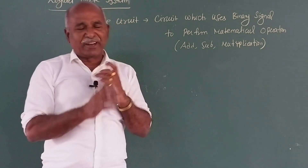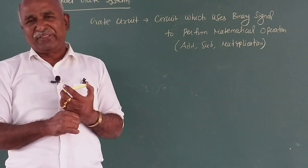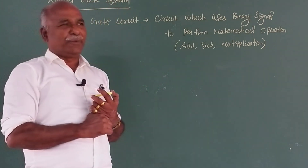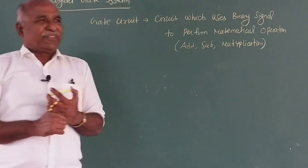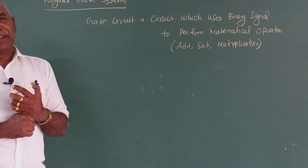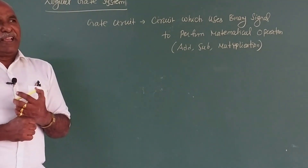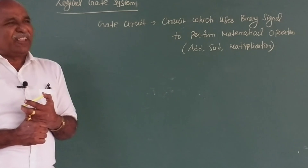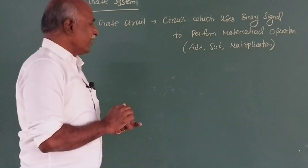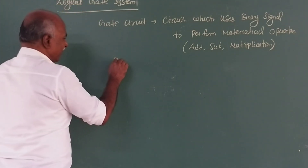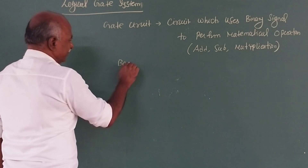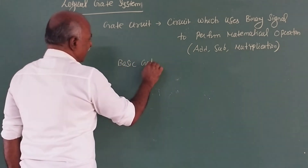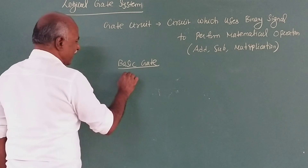This is one basic circuit. If we are able to implement it, we will find the topic easier in digital circuits. In the gate circuit, there are basic gate circuits. Three gate circuits are basic gate circuits.